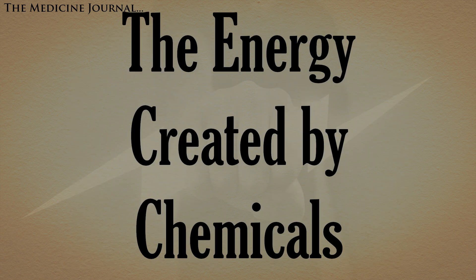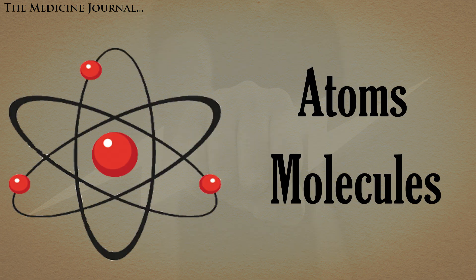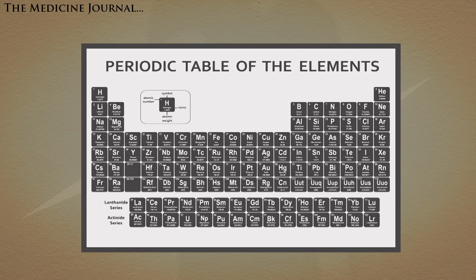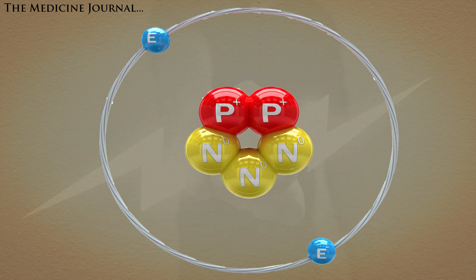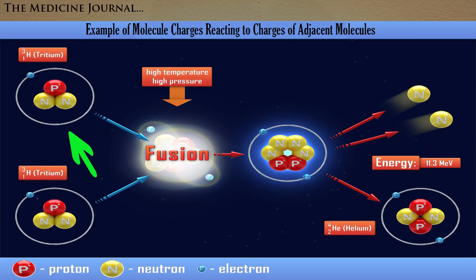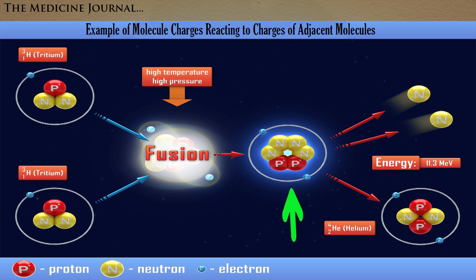The energy created by chemicals is due to the reactions of the atoms and molecules present. All of the elements we take into our bodies, like oxygen, sodium, potassium, and calcium, have a specific electrical charge, meaning they have a specific number of electrons, protons, and neutrons. Those specific charges, whether positive or negative, react to the charges of adjacent molecules. This reaction is what creates the energy needed to create electricity.